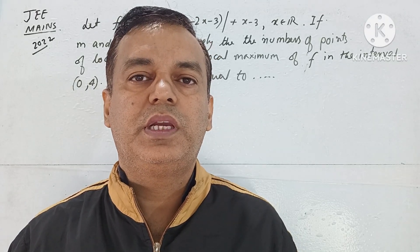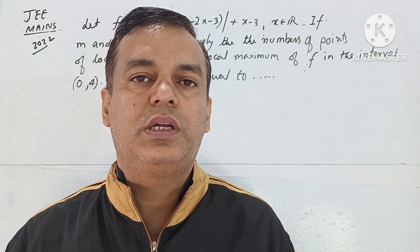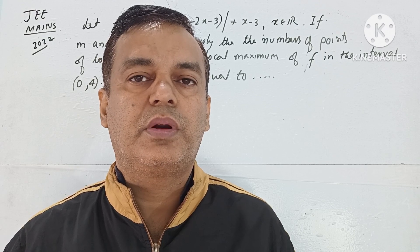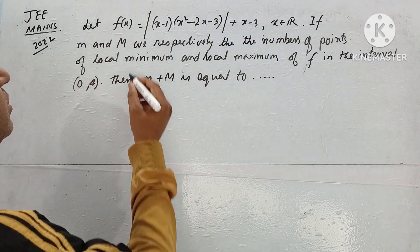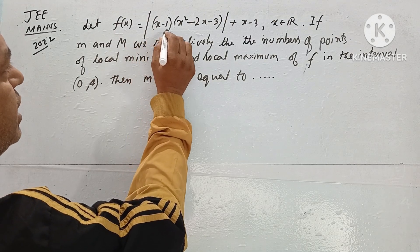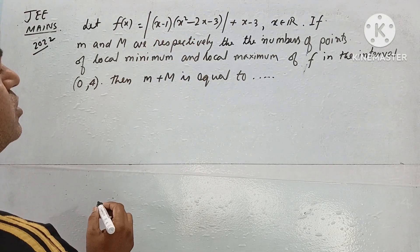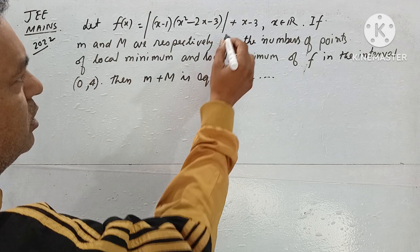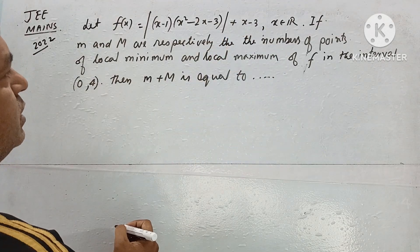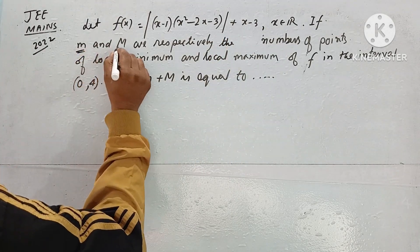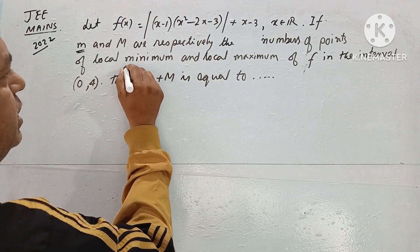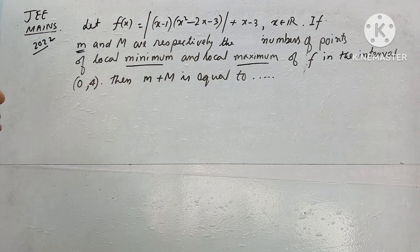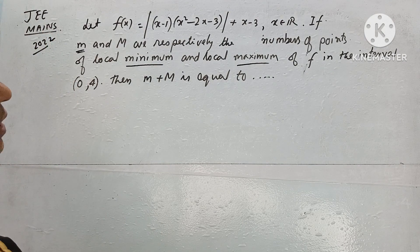Hello and welcome to the video. This video is JEE Mains 2022, application of derivatives problem. Let f(x) equal to modulus of (x-1) times (x² - 2x - 3) plus x - 3. Small m and capital M are respectively the number of points of local minimum and local maximum of f in the interval (0,4). Then we need to find the value of m plus M.